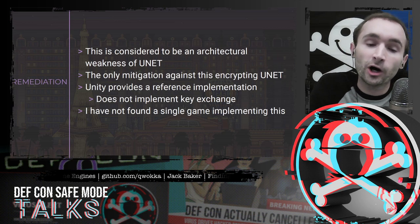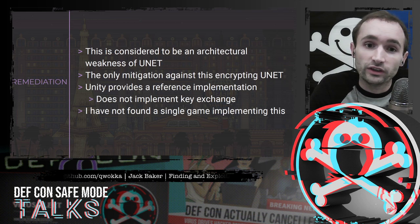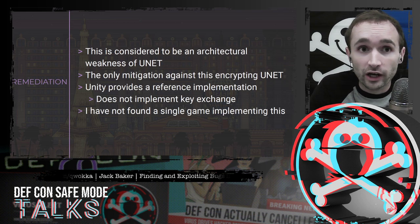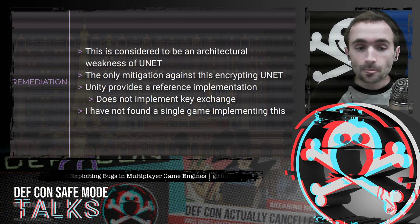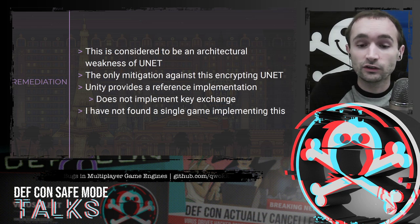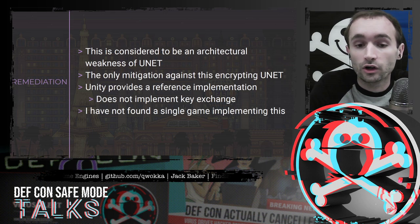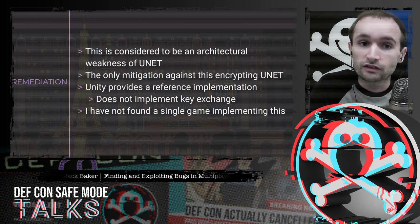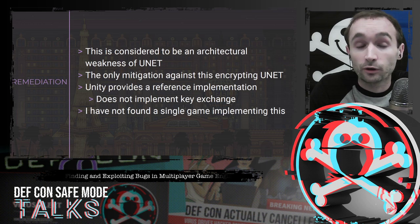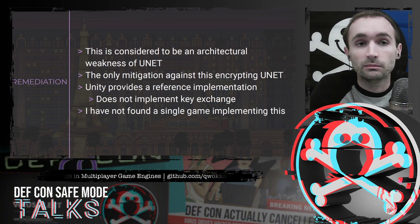For remediations: this is considered an architectural weakness with UNet. The actual fixes required to prevent this entirely are not going to happen. The only mitigation, aside from moving away from UNet, is to actually encrypt UNet. Unity provides a reference implementation that does a decent job, but it's not complete — it doesn't do key exchange for you, so you're still somewhat on your own. I have not found a single game implementing encryption over UNet. And this is a mitigation, not a fix: if your encryption is not complete and an attacker can bypass it, these bugs still exist exactly as they do now.